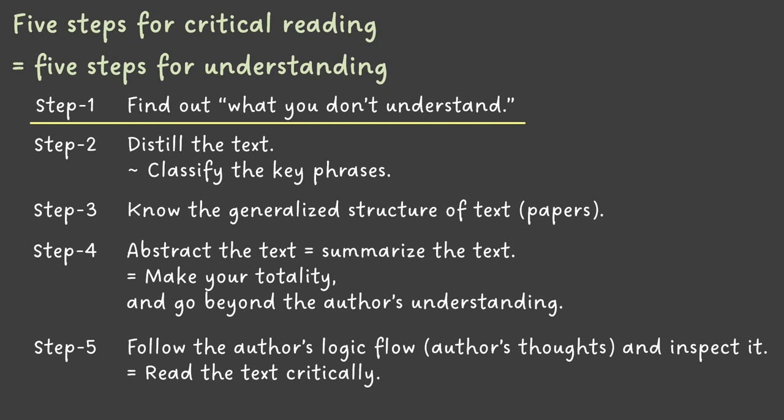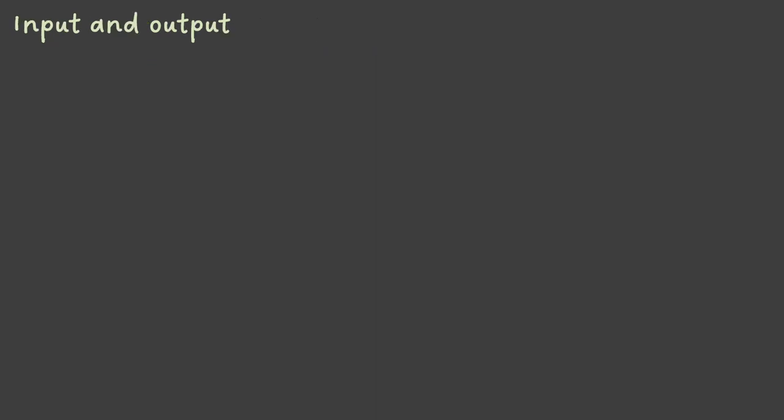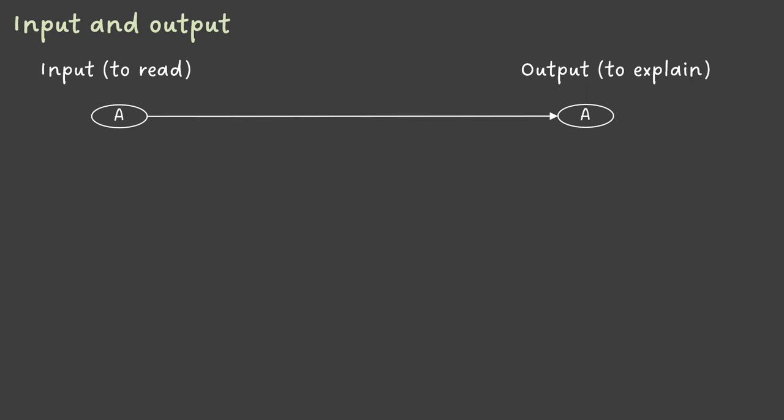So in any way, today I would like to start from step one: how to find out what you don't understand. To think about understanding or comprehending, I would like to start from the relationship between input and output. Input is to read — no argument on that. And the output is to explain. Maybe you didn't think much about it, but perhaps there is no objection for this. So the question is how we can connect input and output. In a straightforward way, you can directly draw a line from input to output — you input A and explain A. That quite frequently happens with beginners.